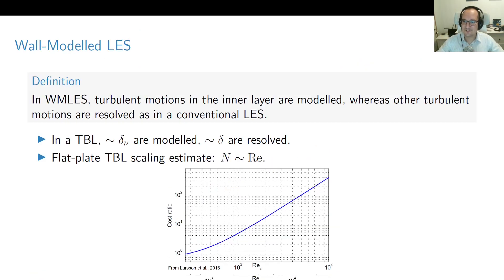All right, now we're finally in a position to define what wall-modeled LES is, and of course it's connected to what we've just discussed and the fact that we don't want to resolve those turbulent motions on the scale of delta_nu. So here's the definition: In wall-modeled LES, turbulent motions in the inner layer are modeled, whereas other turbulent motions are resolved as in a conventional LES. So if we look at our scales for the turbulent boundary layer, as we said, those on the scale of delta_nu are modeled, but we are committed to resolving the outer layer properly, so all the scales of size delta are, in fact, supposed to be resolved well.